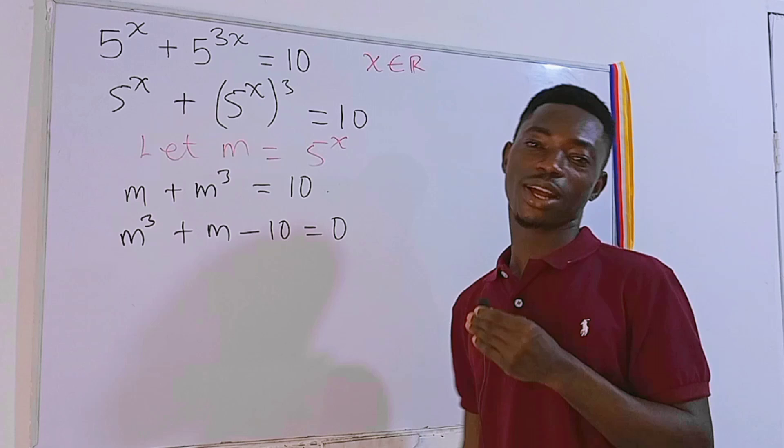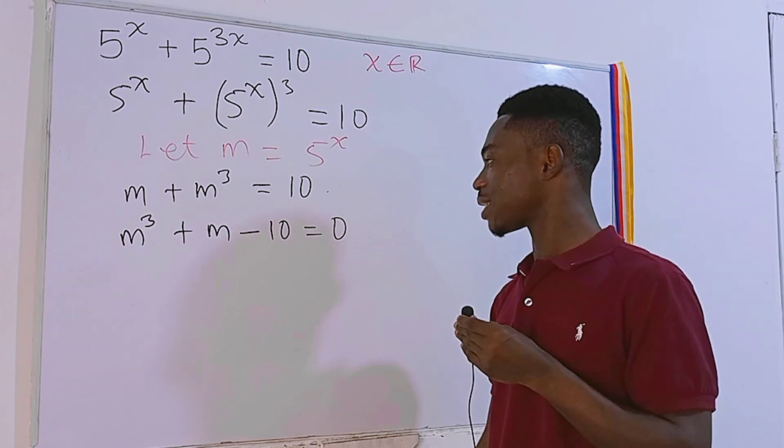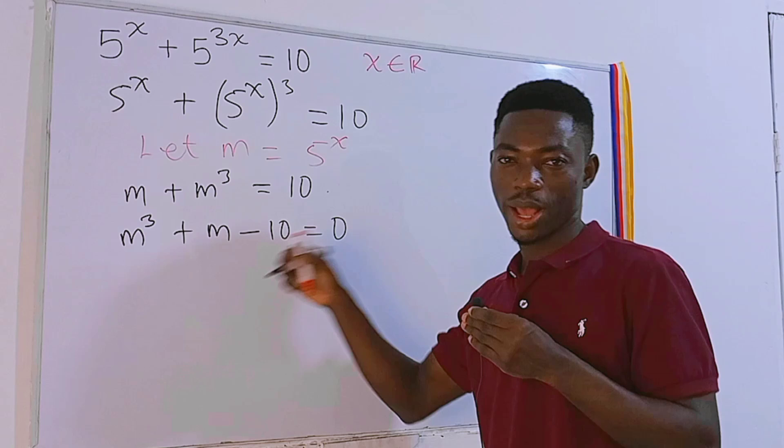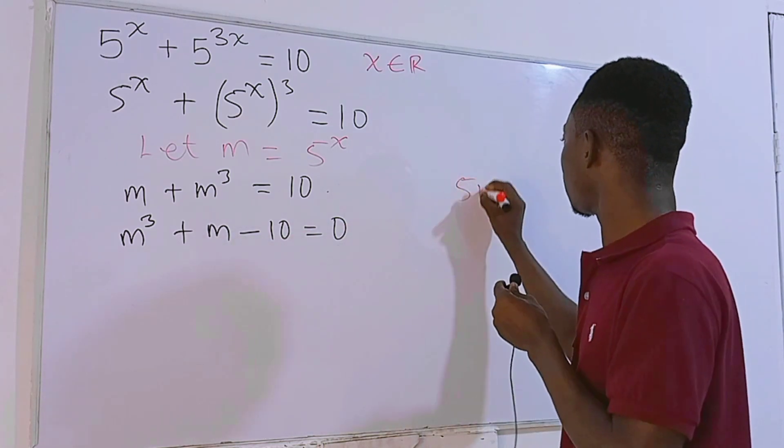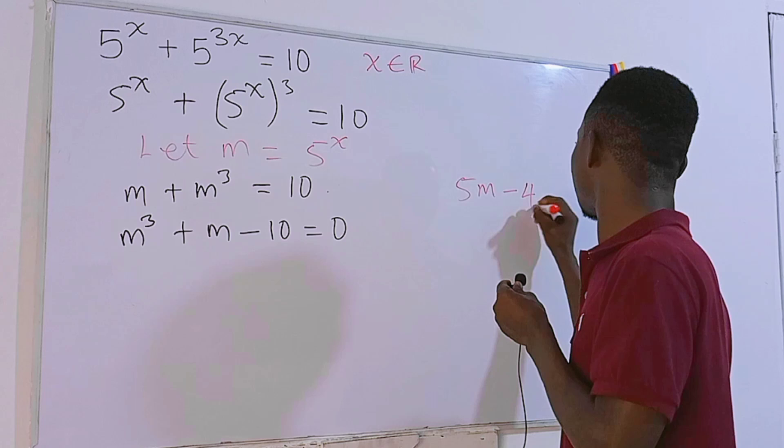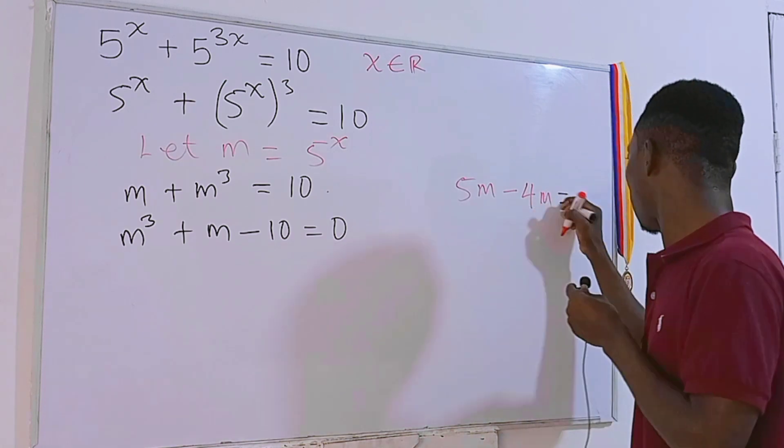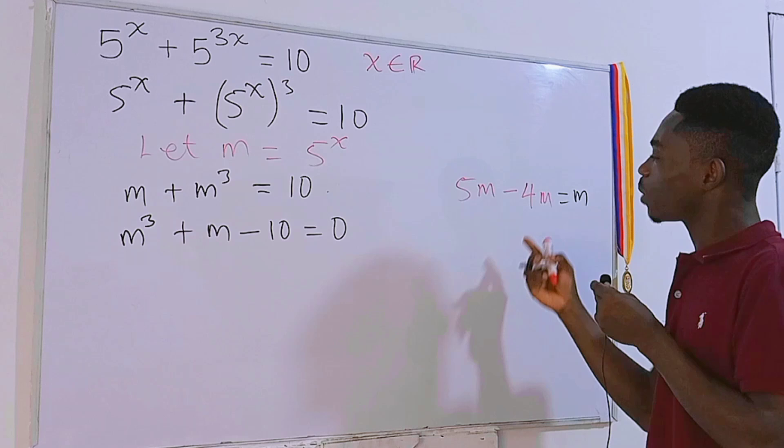But as soon as we make the terms 4, we can easily factorize. So what I will do is, we have just m here, I will express that as 5m minus 4m, and we all know that this will give us m.